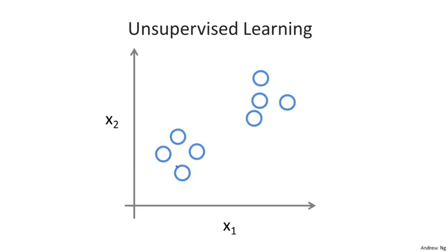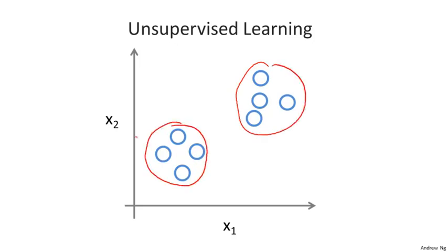Given this data set, an unsupervised learning algorithm might decide that the data lives in two different clusters. So there's one cluster and there's a different cluster, and the unsupervised learning algorithm may break this data into these two separate clusters. This is called a clustering algorithm, and it turns out to be used in many places.